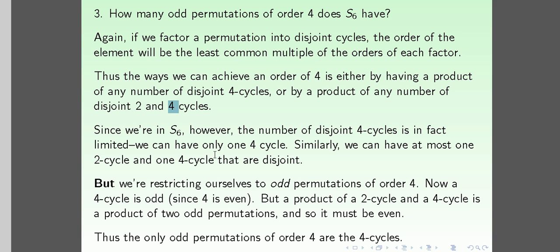In S6, we can only fit one 4-cycle, and at most one 2-cycle together with a 4-cycle. But we are restricted to odd permutations. A 4-cycle is odd (since 4 is even, a 4-cycle consists of 3 transpositions). However, the product of a 2-cycle and a 4-cycle is a product of two odd permutations, which is even. So those combinations are excluded.